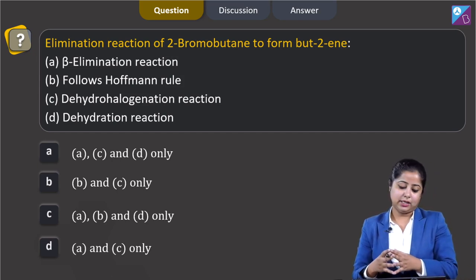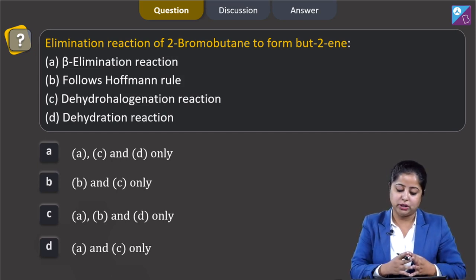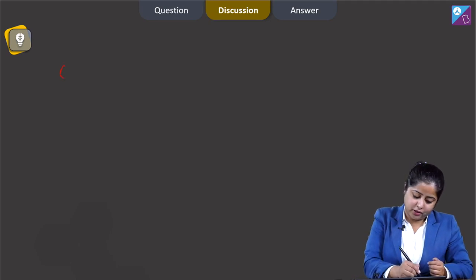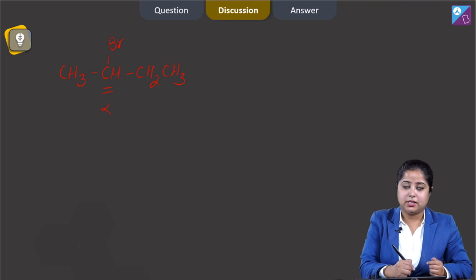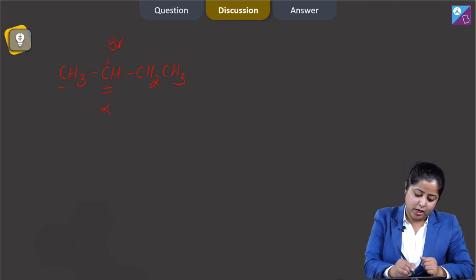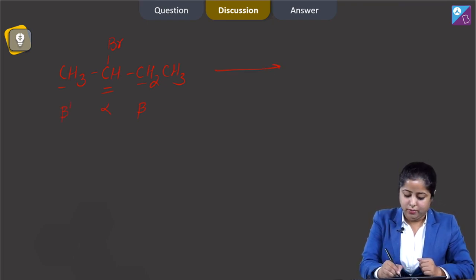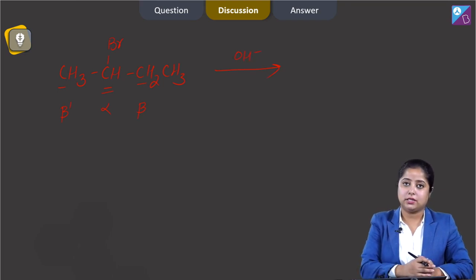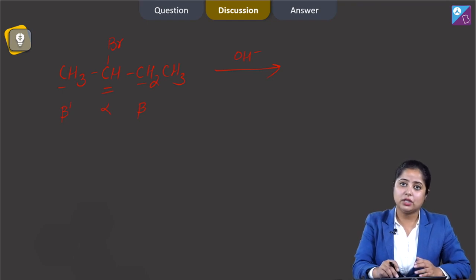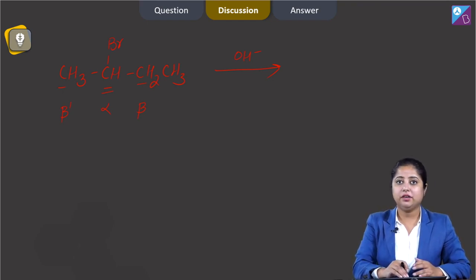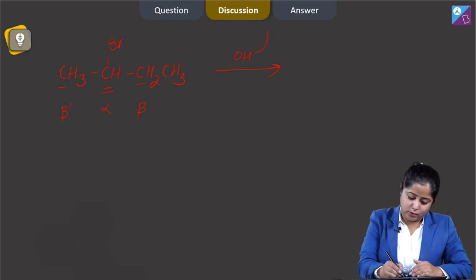For this question, we have to understand the mechanism that takes place during the elimination of 2-bromobutane to form butene. We are given with 2-bromobutane, that is CH3CHBrCH2CH3. This carbon is the alpha carbon since the halogen is attached to it, and the carbons next to it are beta carbons. The OH minus base will attack the hydrogen atom of the beta carbon, but here we have 2 beta carbons.